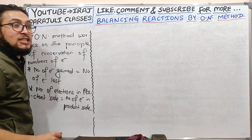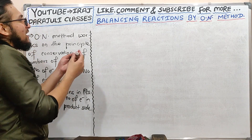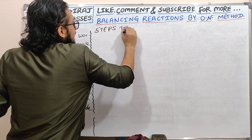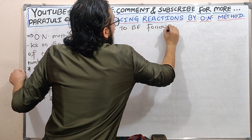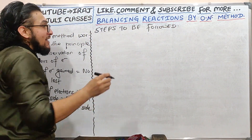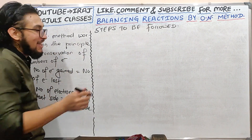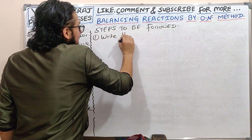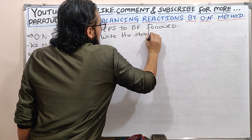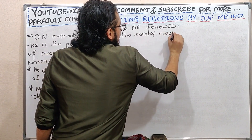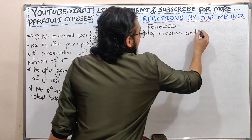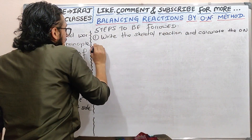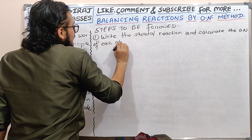So we have steps to be followed. The first step: write the skeletal reaction and calculate the oxidation number of each atom. All atoms are considered.